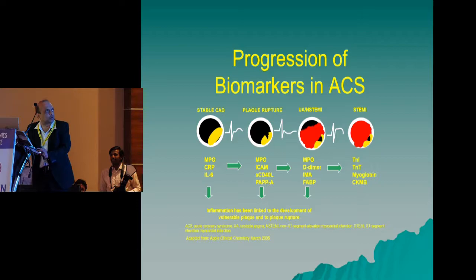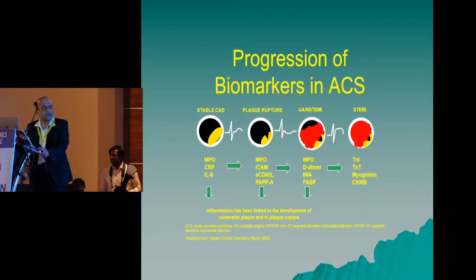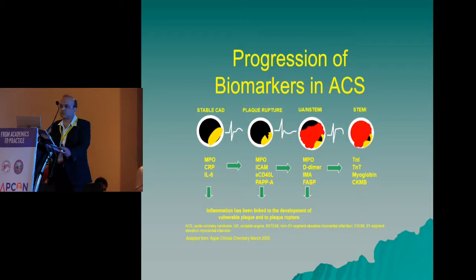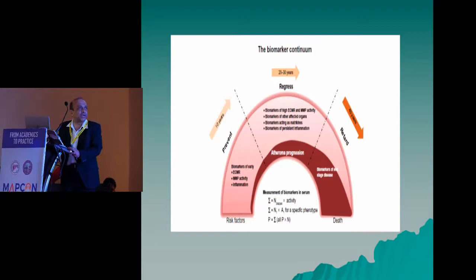Atherosclerosis starts with a stable plaque, that plaque becomes unstable, then there is a non-total, subtotal occlusion of the coronary artery giving rise to a clinical event, and then there is total coronary artery occlusion. The usefulness of biomarkers is that if we can identify a particular stage in the progression of atherosclerosis, that plaque can be prevented from progression or efforts can be made to regress atherosclerosis and prevent a major coronary event.